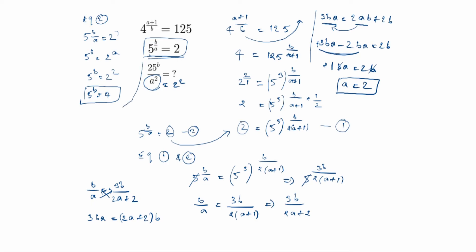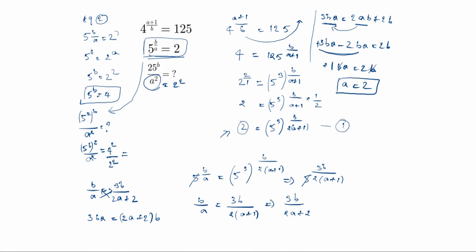Now we need to solve 25 power b by a squared. We write 25 as 5 squared, so it becomes 5 squared power b by a squared, which equals 5 power b, the whole square, divided by a squared. Since 5 power b equals 4, this is 4 squared divided by 2 squared, which is 16 divided by 4, equal to 4. So 25 power b by a squared equals 4 is the answer.